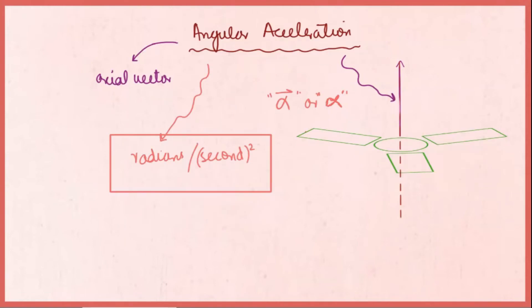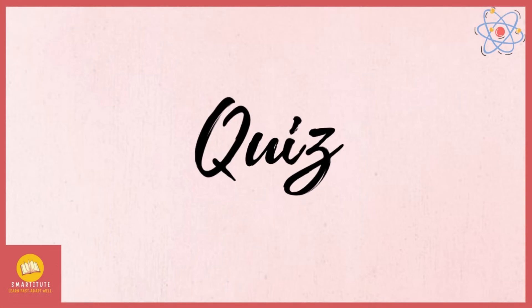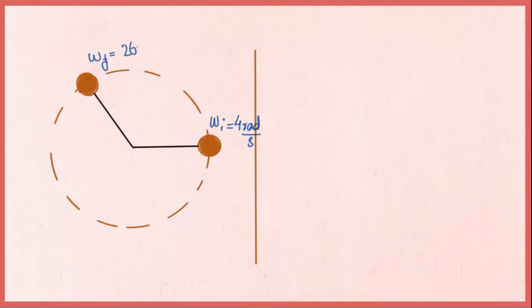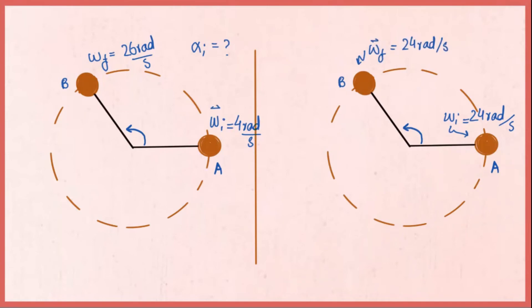The concept of limits will help you better understand instantaneous acceleration — check out the video in the description box. Quiz: Find the average angular acceleration for the given examples and state the direction of angular acceleration as well. The answer is in the description box, but test yourself honestly before checking.